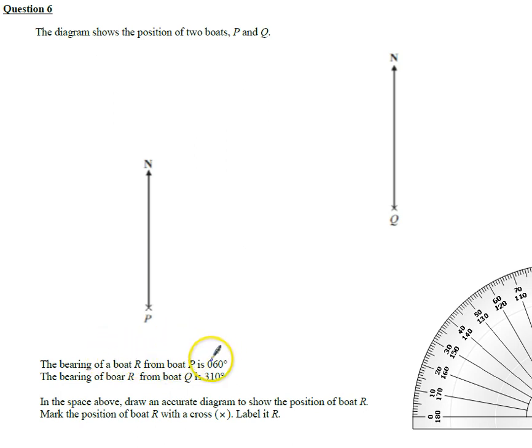So 060 degrees from P, somewhere in this direction, and the bearing is 310 from Q, so somewhere in this direction. And we need to locate this.